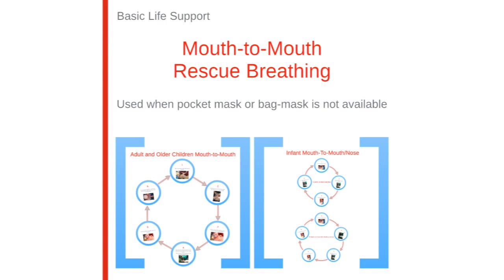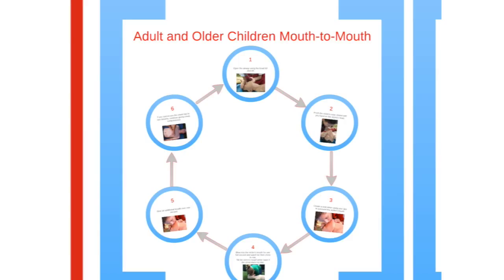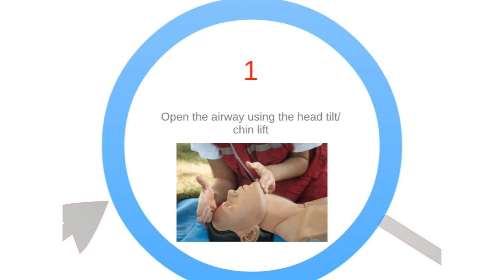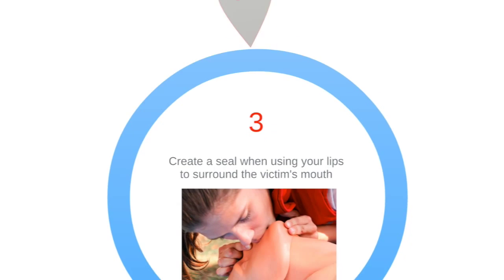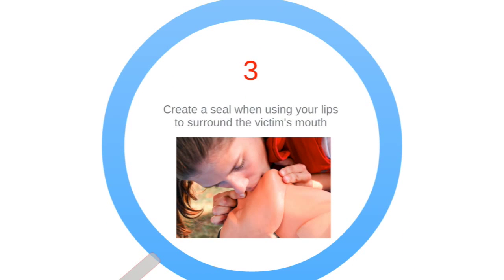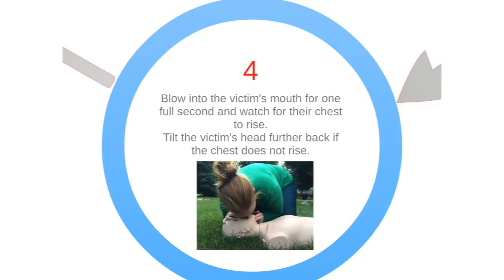Now we will go into mouth-to-mouth rescue breathing. Often a pocket mask or bag mask is not available at the scene of an accident. Mouth-to-mouth rescue breathing is effective in delivering oxygen into the victim's lungs. The process is the same for adults and older children. First, open the airway with the usual head-tilt chin-lift. Pinch the nose shut to prevent air from escaping when delivering breaths, and make sure to create a seal with your lips around the victim's mouth.